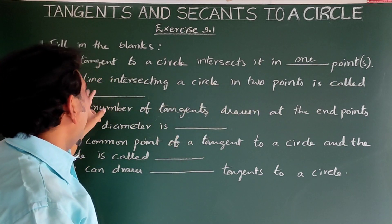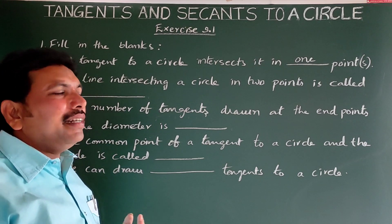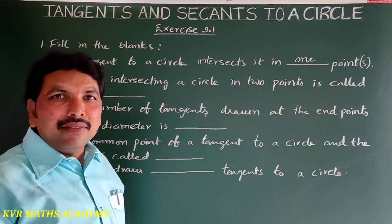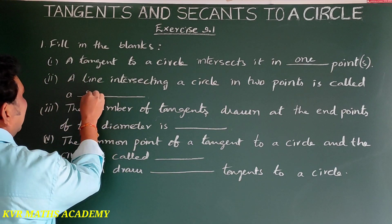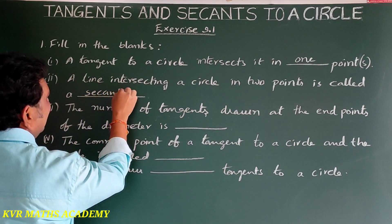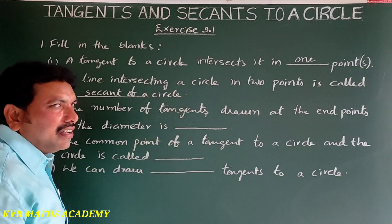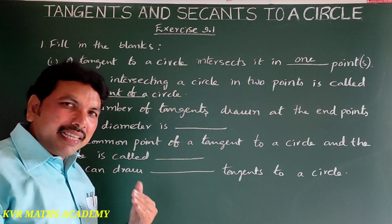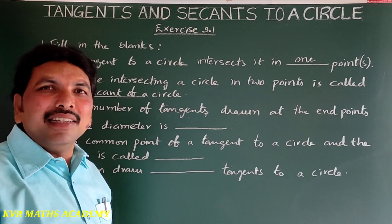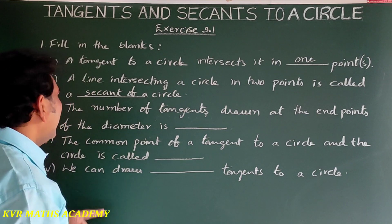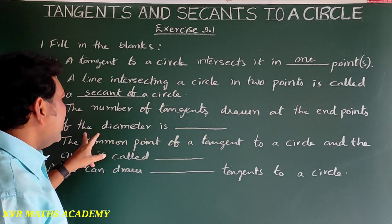Next: a line intersecting a circle in two points is called a secant of a circle. Two points means secant of a circle; one point means tangent of a circle.